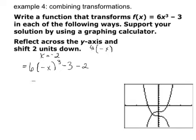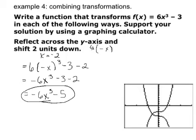So pretty simple. A negative raised to an odd power stays negative. Minus 3, minus 2. Negative 6, minus 5. Graph it. Make sure it flips.